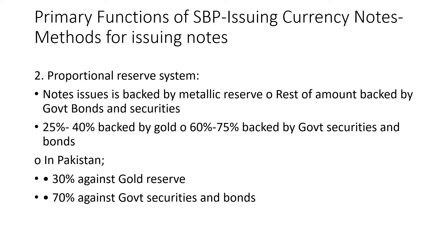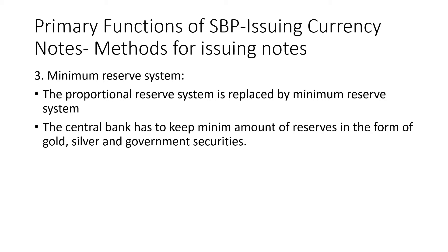Another type of currency issue system is the proportional reserve system. In this system, note issue is backed partly by metallic reserve and the rest by government bonds and securities — approximately 25 to 40 percent is backed by gold and 60 to 75 percent by government securities and bonds. In Pakistan, 30 percent of note issues are against government reserves and 70 percent against government securities.